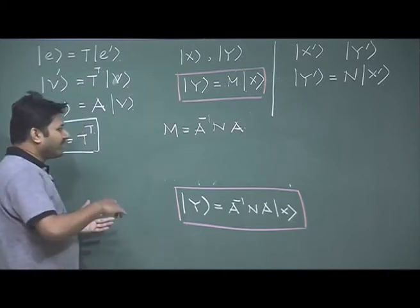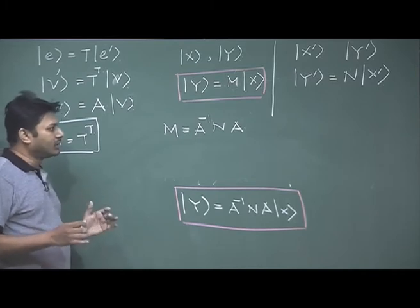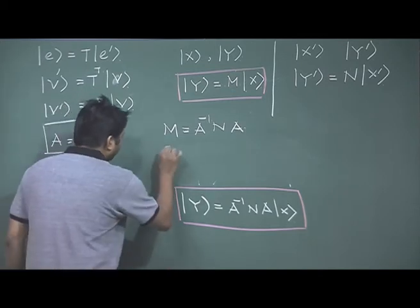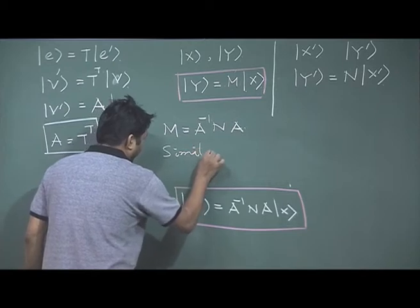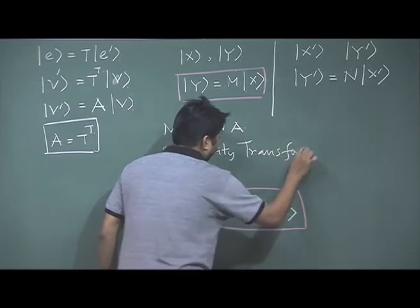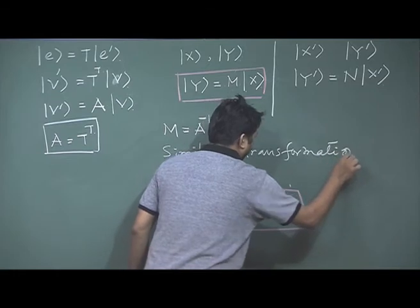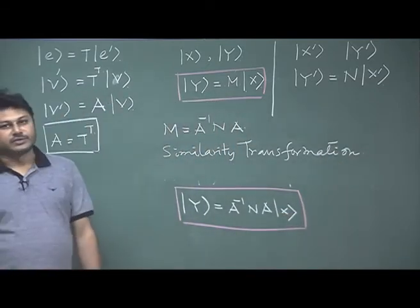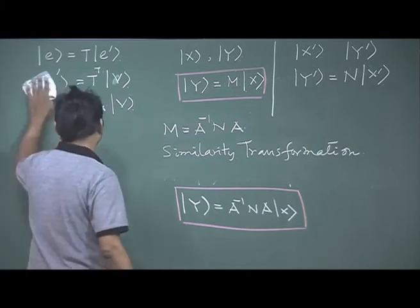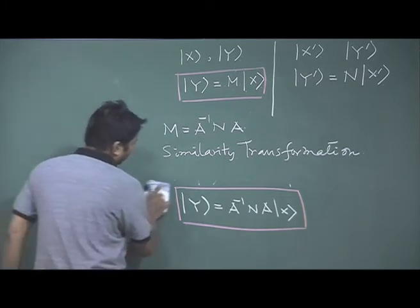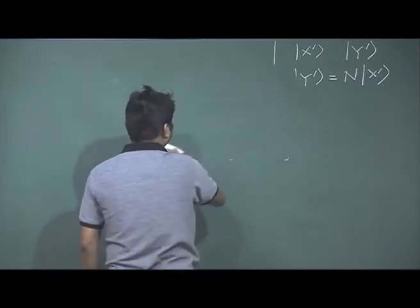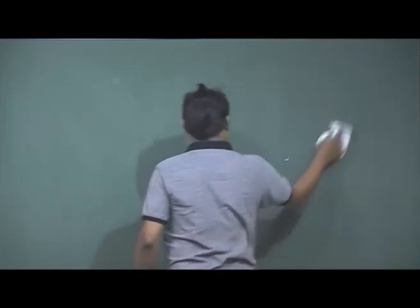This is called the similarity transformation. I can transform one matrix to another matrix in operator form because matrices now work as operators — they operate over vectors. After understanding similarity transformation, we will now go to a more important topic: eigenvalues and eigenvectors of a matrix.